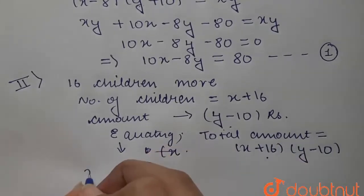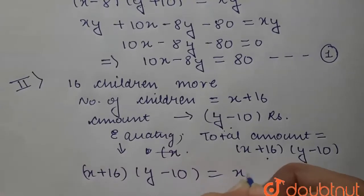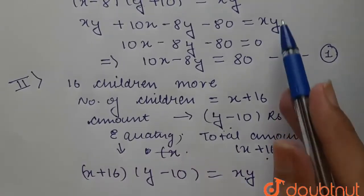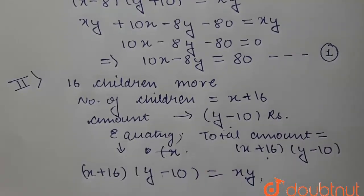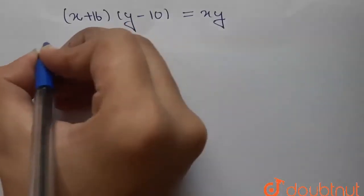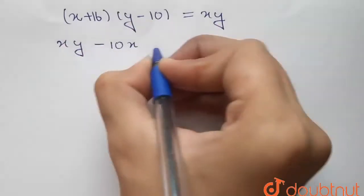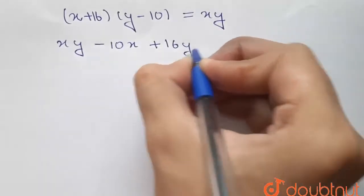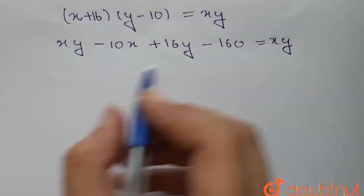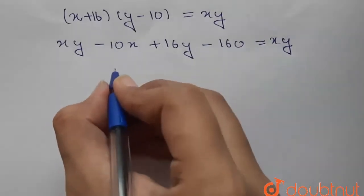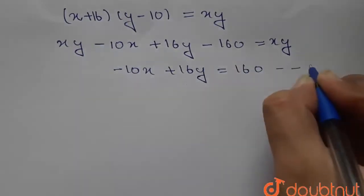Equating x plus 16 into y minus 10 with xy, and expanding: xy minus 10x plus 16y minus 160 equals xy. The xy terms cancel, leaving minus 10x plus 16y equals 160. This is Equation 2.